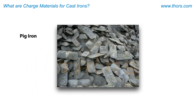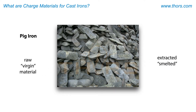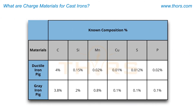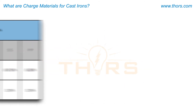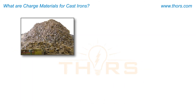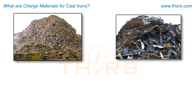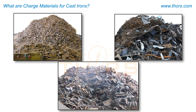Pig iron is considered raw or virgin material that is extracted or smelted from iron ore. Pig iron tends to have high amounts of carbon at typically around 4% and low silicon at a range of about 0.1% to 2%.